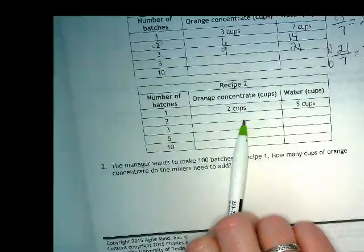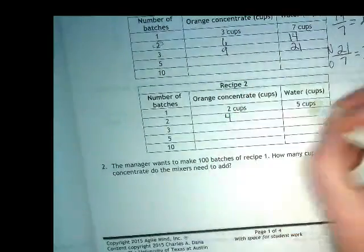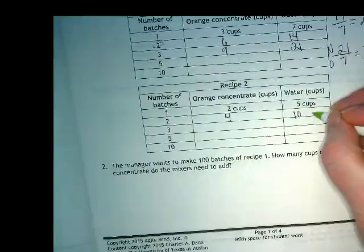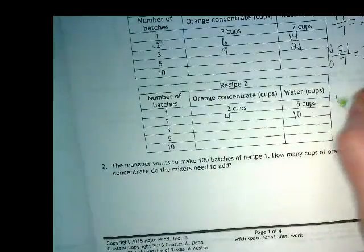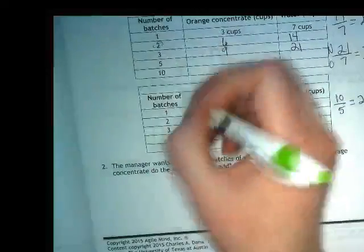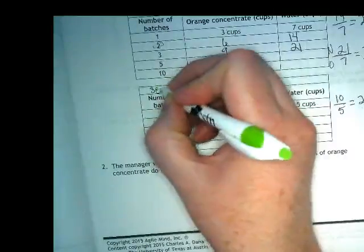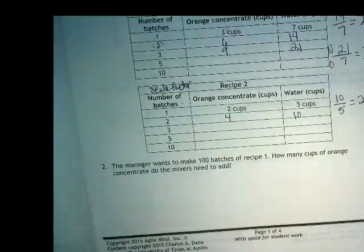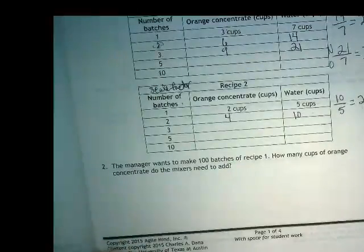The second recipe calls for two cups of orange juice and five cups of water. If we were going to double this second recipe, how many cups of juice would we put in? Four. And then? How much water? Ten. And we could use this idea of new to old and do ten over five equals two. That's our scale factor. Well, the number of batches in this situation is your scale factor. It's telling you how much more of the juice you're going to make. And if I double it, I have to double both the water and the orange juice. If I double just the orange juice but not the water, you'd have really strong orange juice, right?